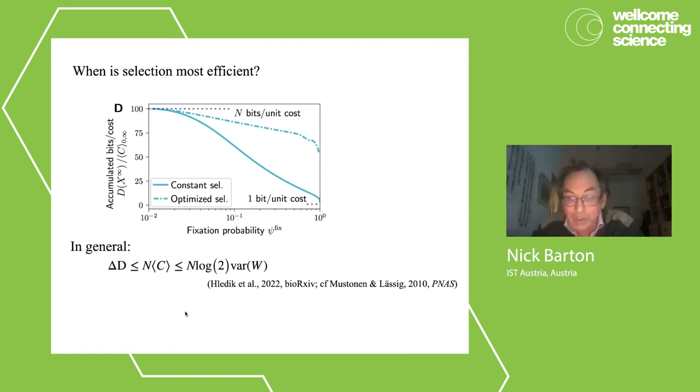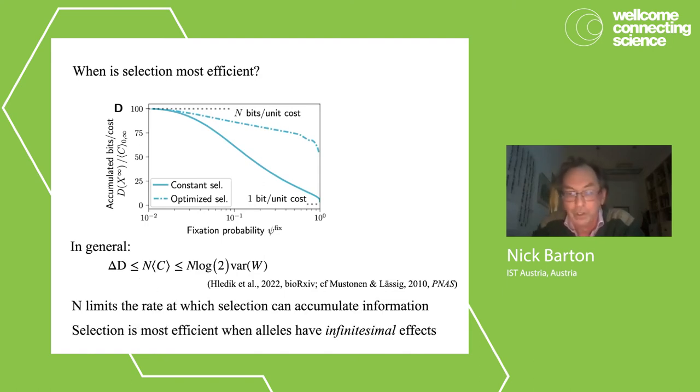So actually, there's a very general bound which Miso Athleta, who's a student working at IST, recently derived, which says that very generally, and we're making really no assumptions about how selection works, the increase in information is bounded by population size times cost. And so population size limits the rate at which selection can accumulate information. And really selection, crucially, is most efficient when alleles have infinitesimal effects. So this is quite counterintuitive. I mean, it means that, and I think this is the most disturbing conclusion, the selection is most efficient when it's least detectable.